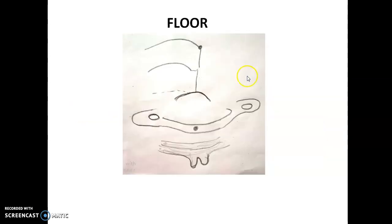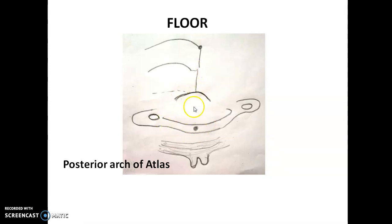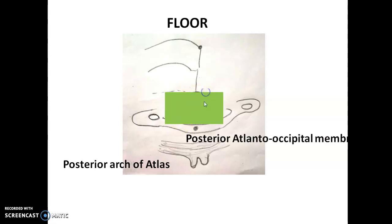Coming to the floor of the suboccipital triangle: it is mainly formed by the posterior arch of the atlas, and the foramen magnum (part of the occipital bone). Between the arch of the atlas and the foramen magnum, there is a gap that cannot remain open in the living — it is covered by a membrane called the posterior atlanto-occipital membrane. So the floor is formed by the posterior arch of atlas and the posterior atlanto-occipital membrane — this is frequently asked in examinations.